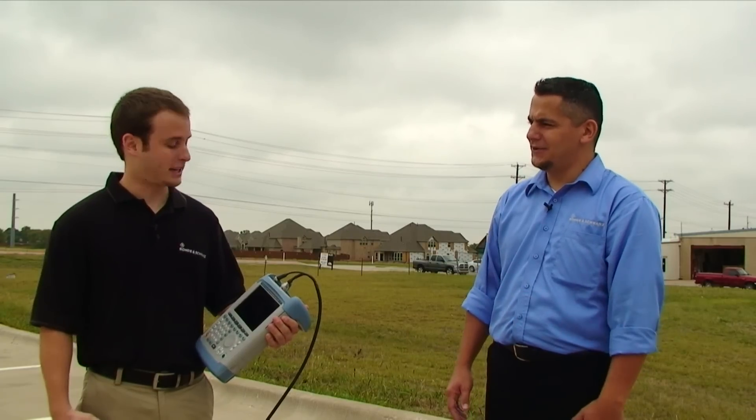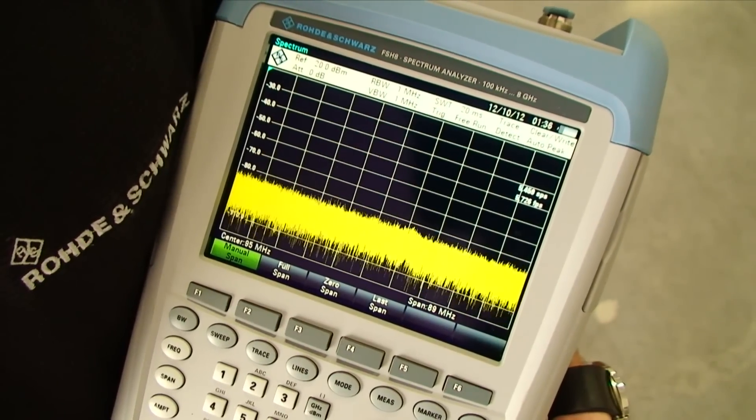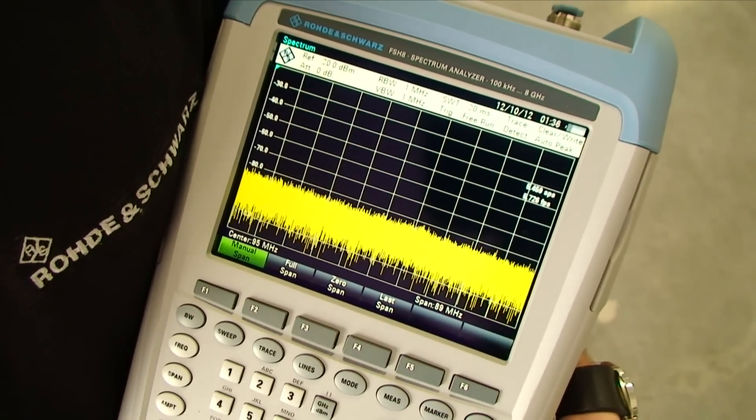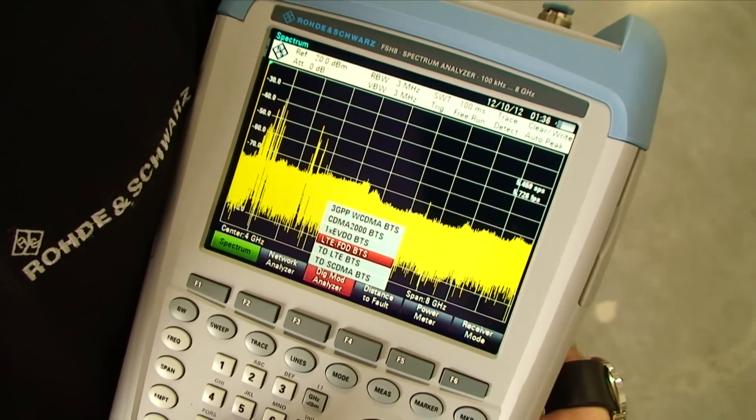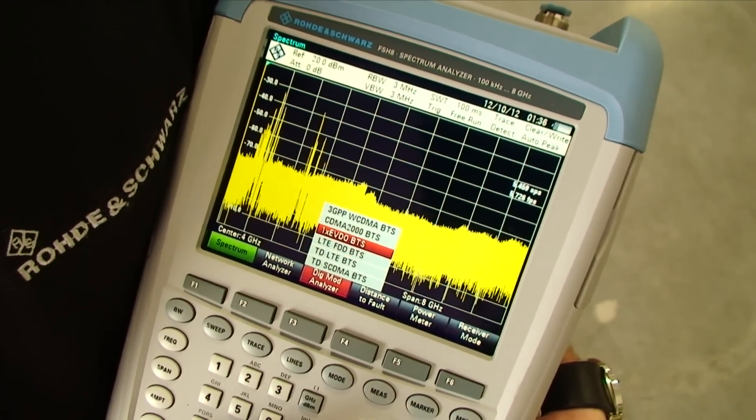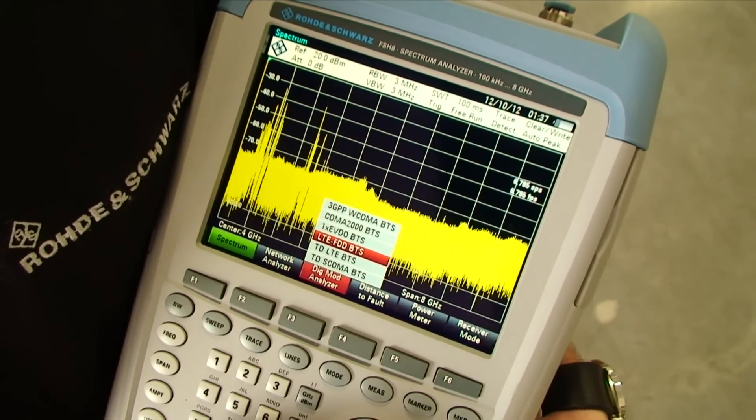Could you walk us through the settings? Absolutely, I can show you a few things. The first thing I'm going to do is preset the instrument to wipe out the settings. I'm going to switch over to the digital modulation analyzer mode of the FSH. As you can see, we support different technologies such as CDMA, EVDO. In this case, I'm going to select LTE FDD.